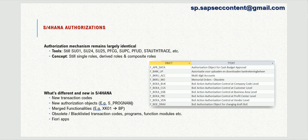For example, if you look at SM36 or SM37, you'll find a couple of new objects in those transaction codes. Similarly, for SCC4, SAP now uses TABU_NAM instead of TABU_DIS to restrict access. Another way to identify new objects is to check the USOBT and USOBX tables to see what new objects are coming in.